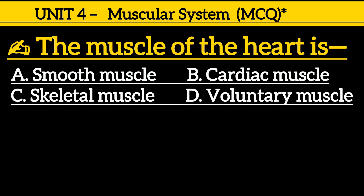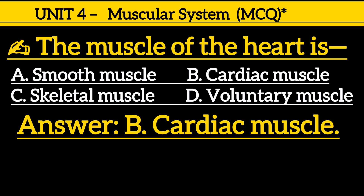Next one is: the muscle of the heart is — option A: smooth muscle, option B: cardiac muscle, option C: skeletal muscle, option D: voluntary muscle. Correct answer is option B, cardiac muscle.